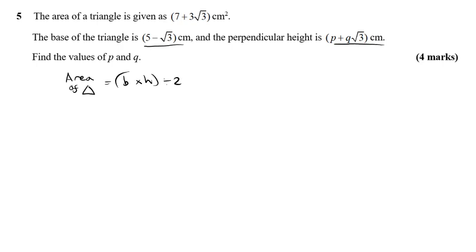So I would first of all do the area multiplied by two. So seven plus three root three times two gives 14 plus six root three. And then all I need to do is divide by the base, and that's going to give me what the perpendicular height must be.